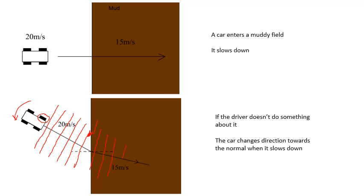Another one is lines of soldiers marching into a muddy field. Don't worry too much about it. All you really need to know is that it changes direction because the speed of the wave changes. It either slows down or speeds up.